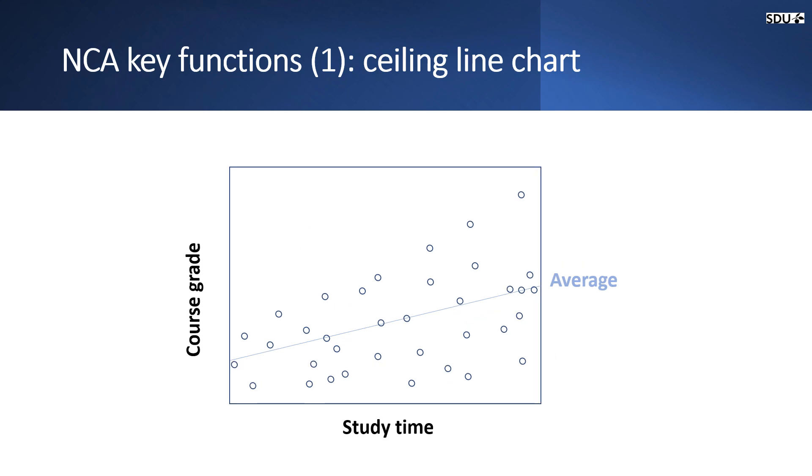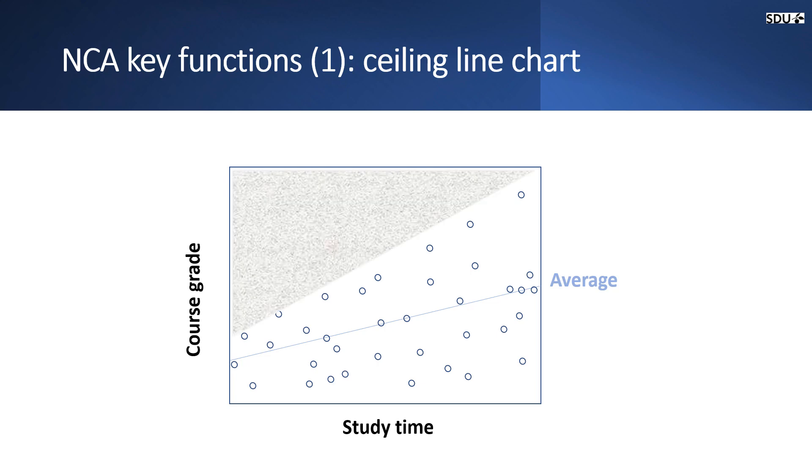The points are scattered around in the plot and this scatter plot chart is the first key NCA function, ceiling line chart. You can see this function in SmartPLS 4. If we add more data, the plot will have a remarkable empty space in the upper left corner and this empty space is an indication for the necessary condition and this is what NCA is interested in.